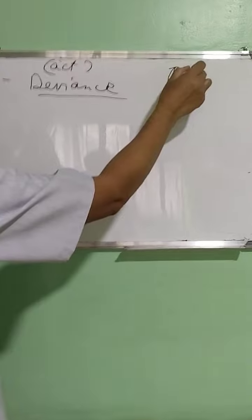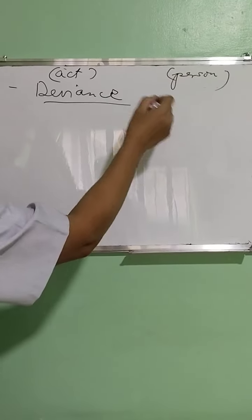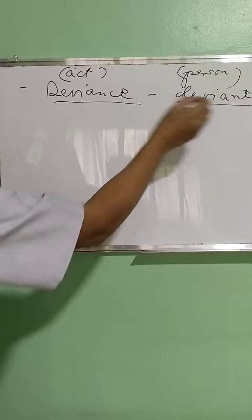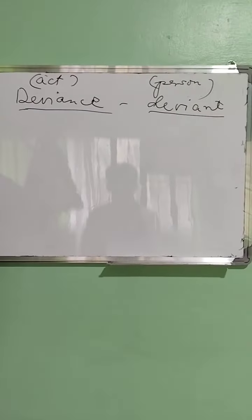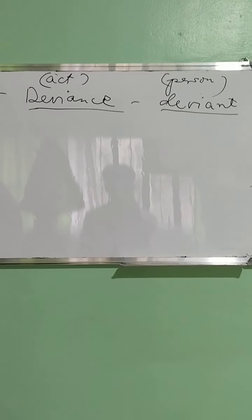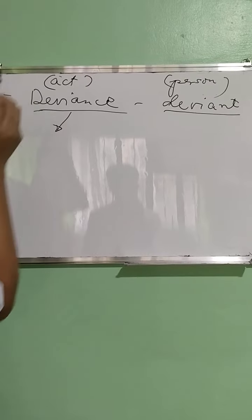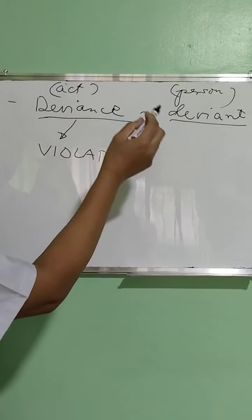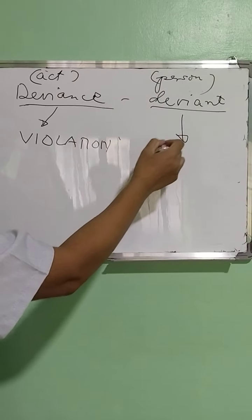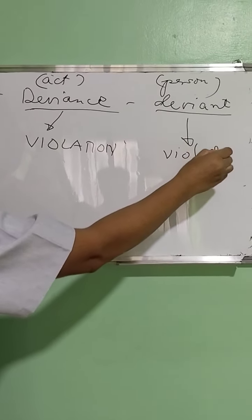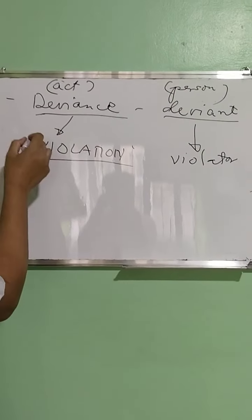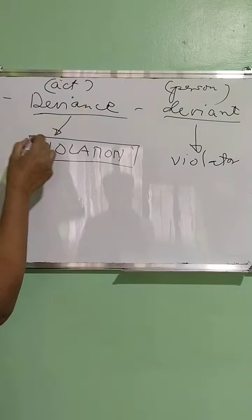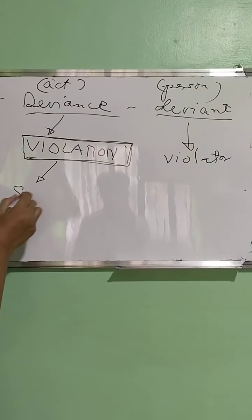The person who commits a deviance is what we call the deviant. So the deviant is the person, and the act itself is called a deviance. Simply, when I talk of deviance, I am talking about a violation — it's a violation of something. And when we talk of a deviant, we are talking about the violator. So, what is it in particular that was violated?